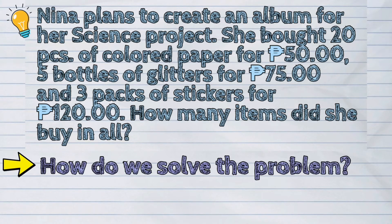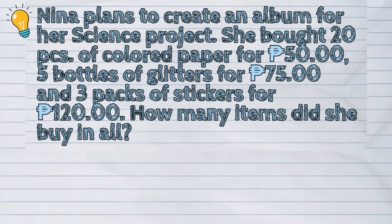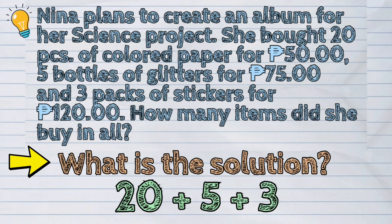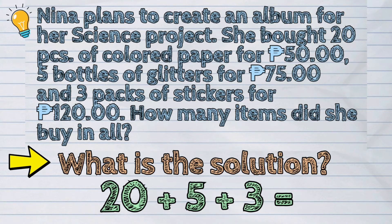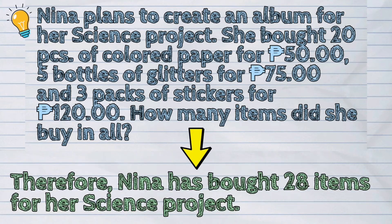How do we solve this problem? We have to add 20 pieces of colored paper, 5 bottles of glitters, and 3 packs of stickers. What is the solution? It's 20 plus 5 plus 3 is equal to 28. Therefore, Nina has bought 28 items for her science project.